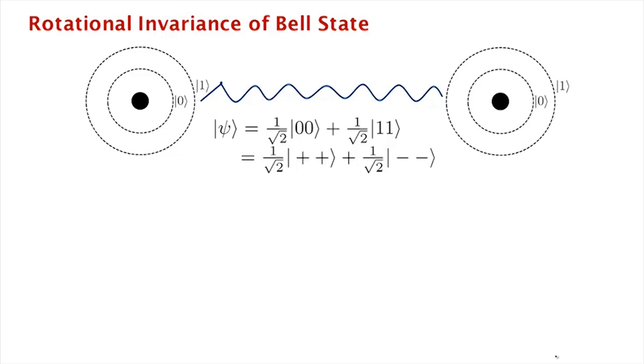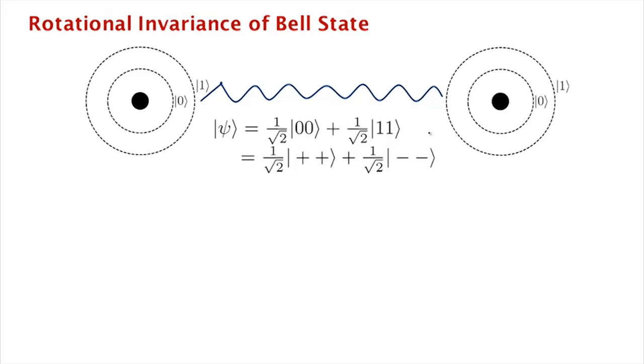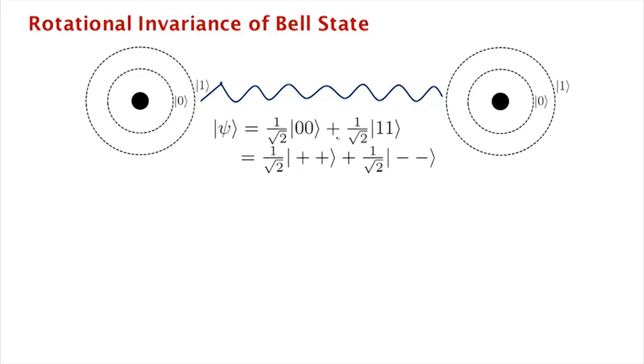Let's go back and look at what we knew about the Bell state. From EPR, we knew that we can write the Bell state as either an equal superposition of 0, 0 and 1, 1, or as an equal superposition of plus, plus and minus, minus.